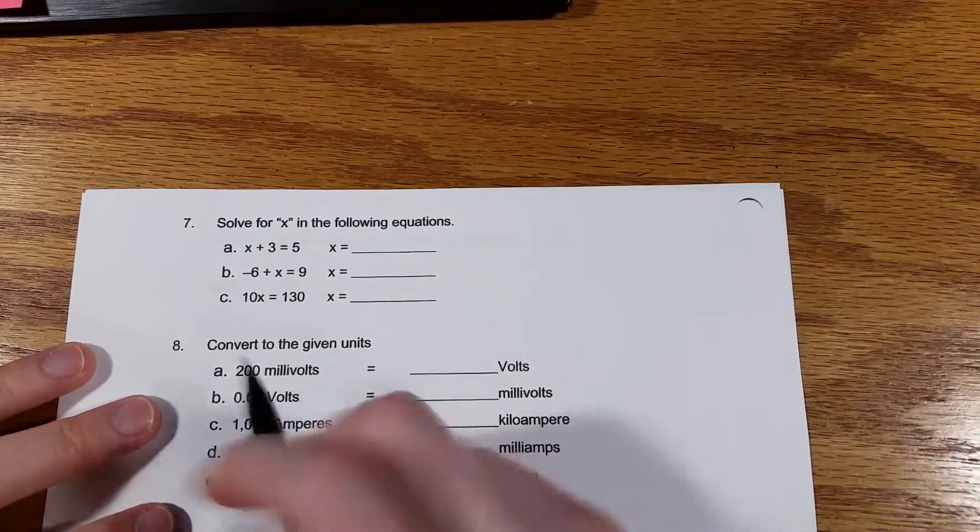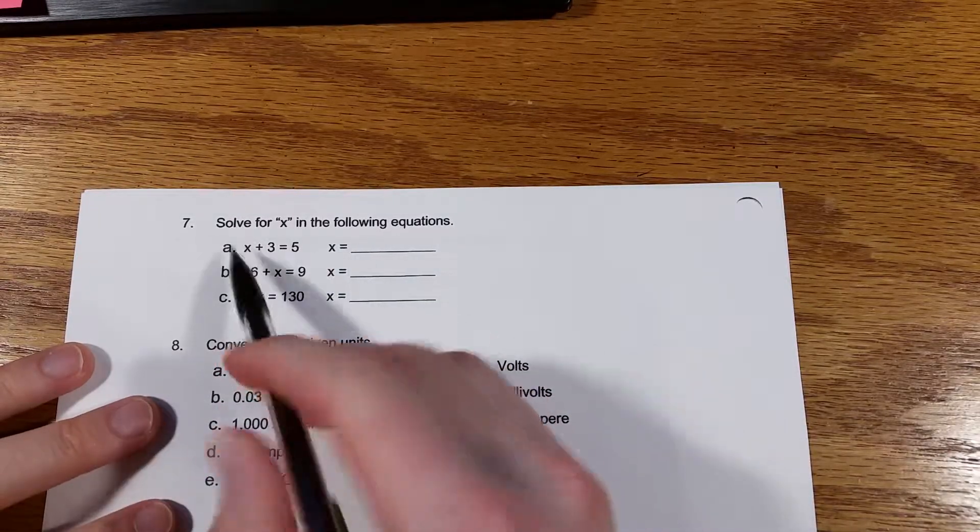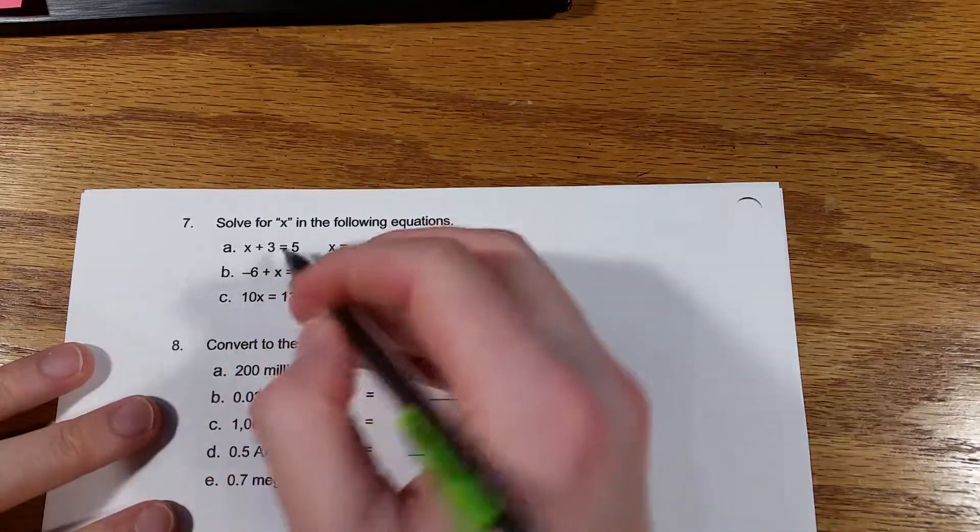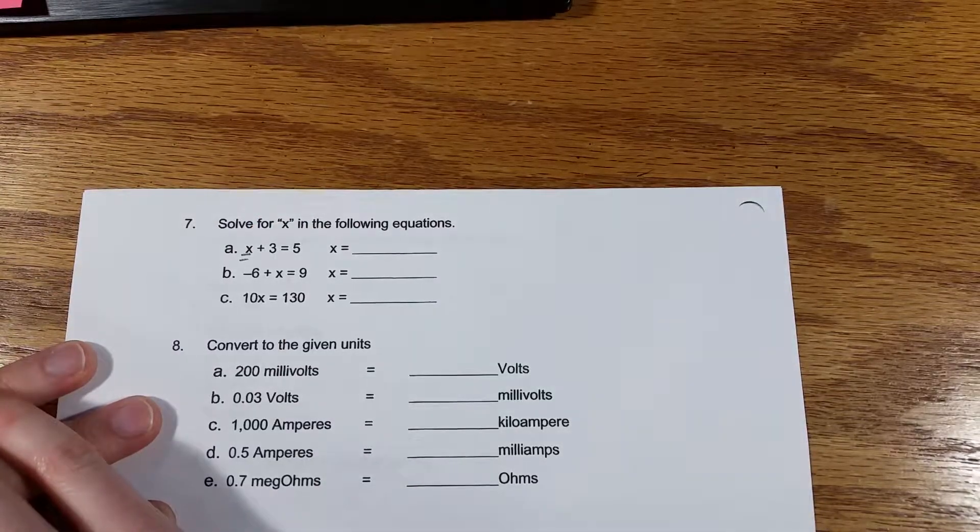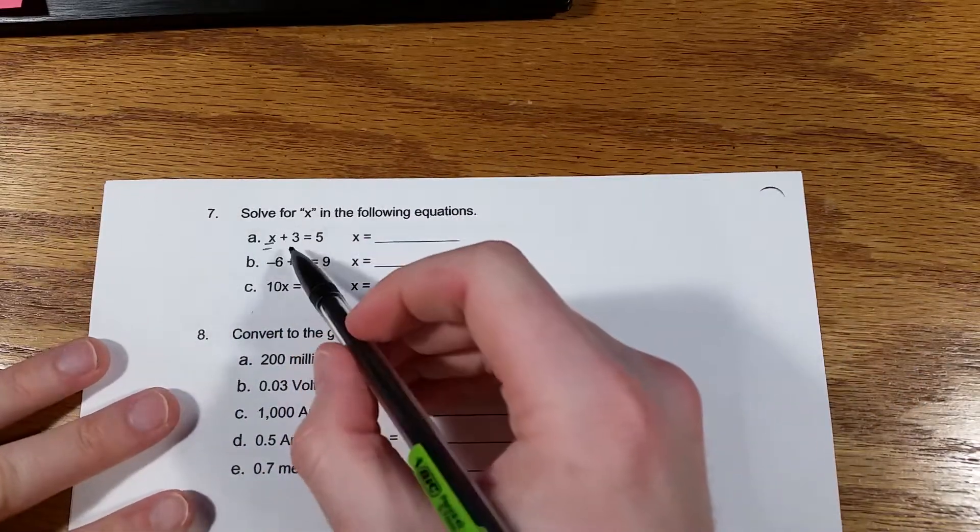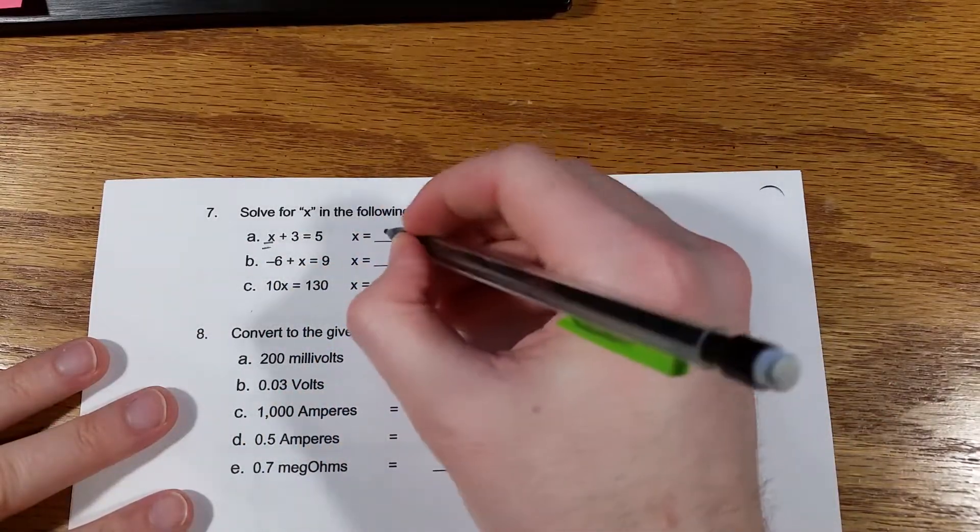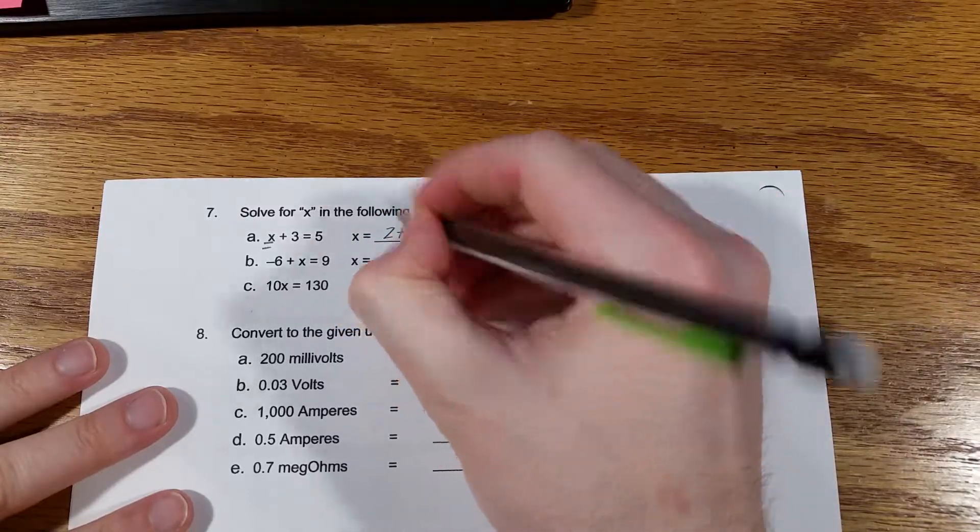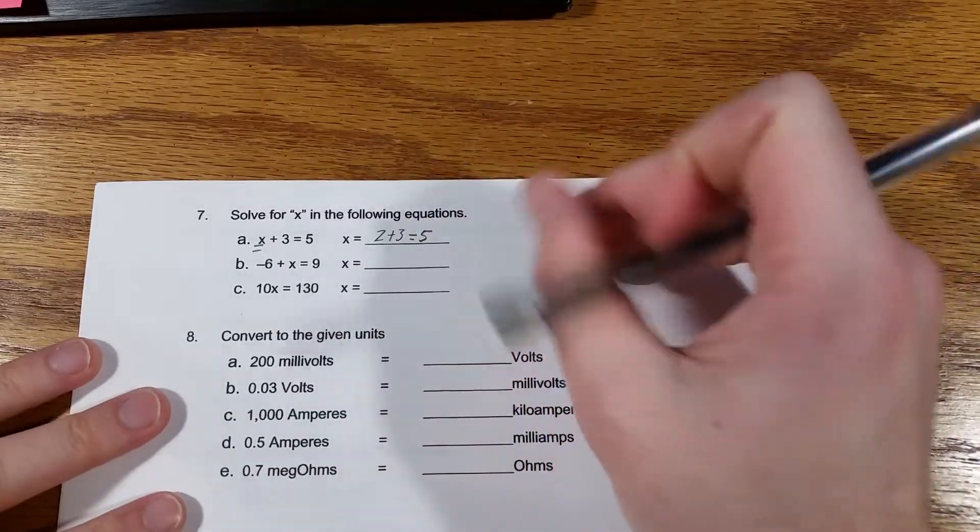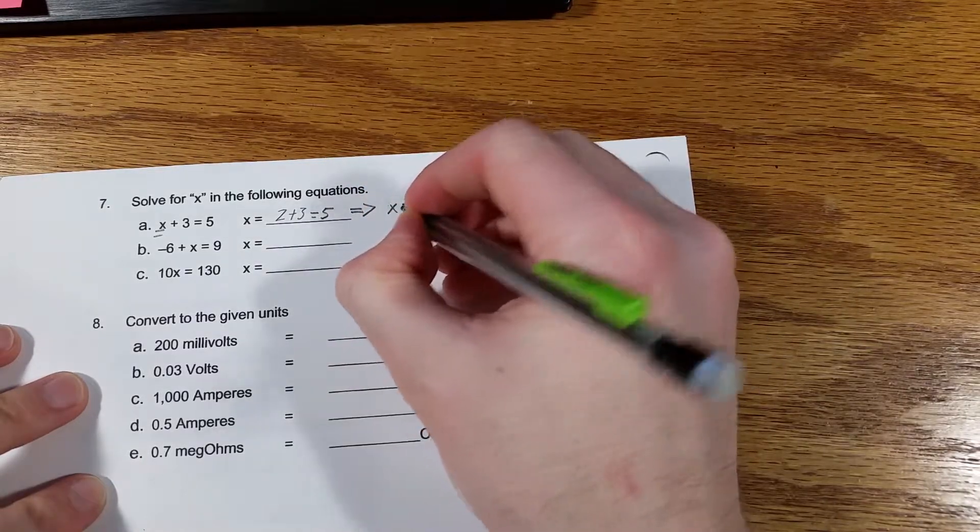Okay, the next one. We have some algebra. Solve for x in the following equations. A is x plus 3 equals 5. Now don't get scared about this letter here. All that really means is essentially a question mark. So in other words, question mark plus 3 equals 5. So, let's try 2 plus 3 equals 5. So therefore, x equals 2.